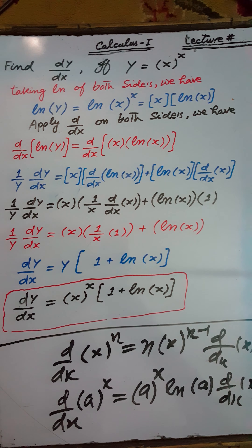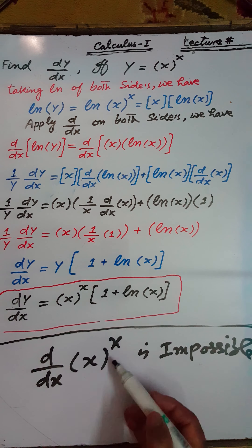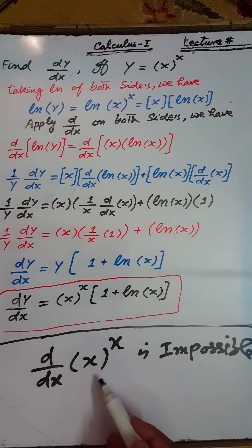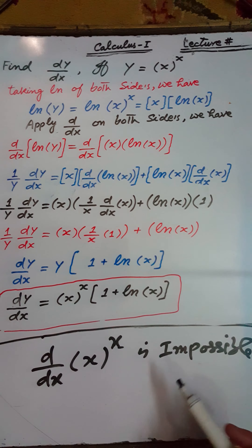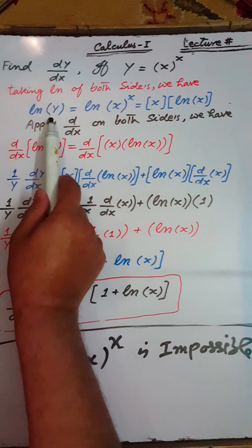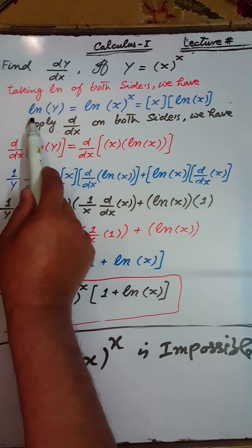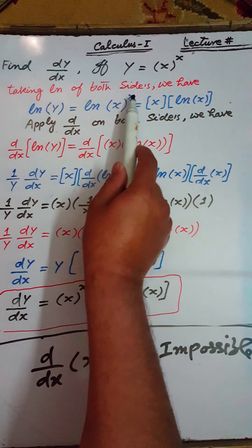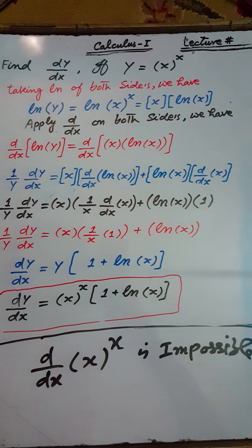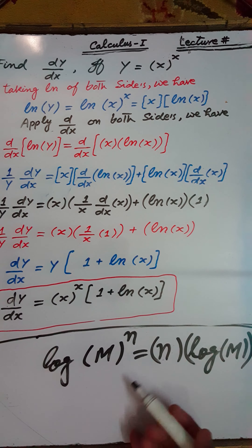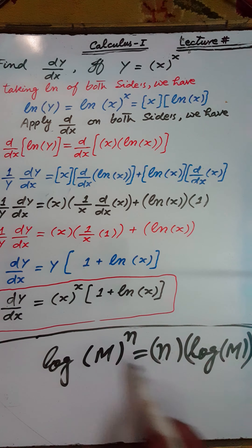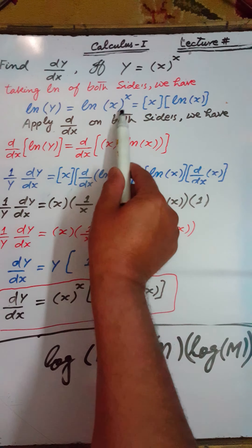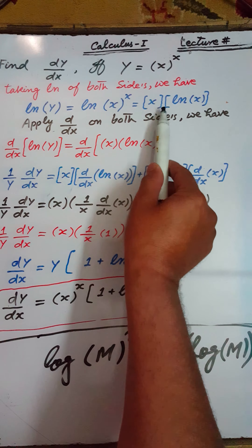Since both the base and power are variables, directly applying the derivative on x^x is not possible. Therefore, we apply log to both sides of the equation: log(y) = log(x^x). Using the logarithm property that log(m^n) = n·log(m), we get log(y) = x·log(x).